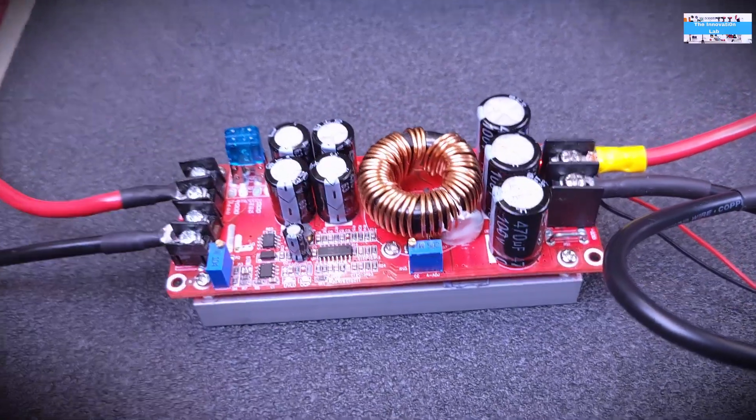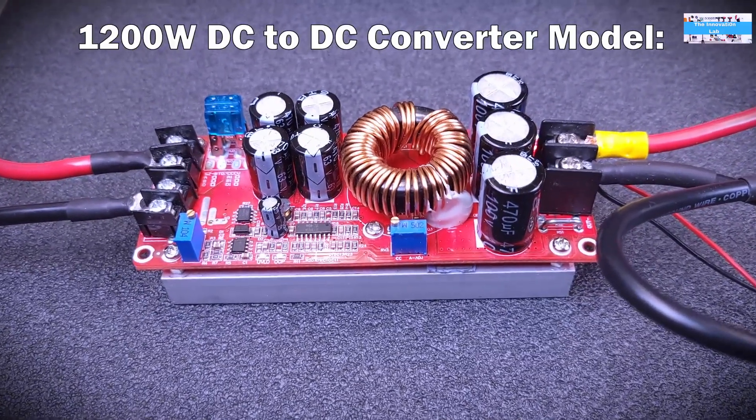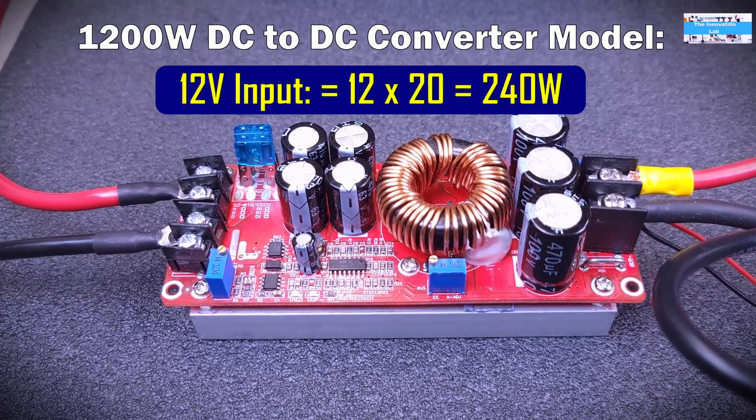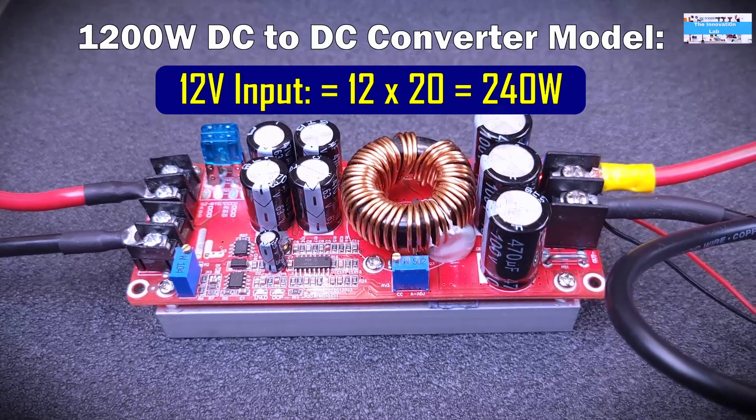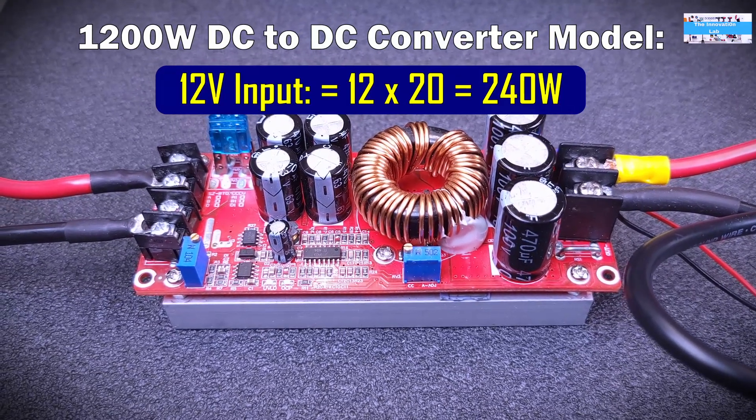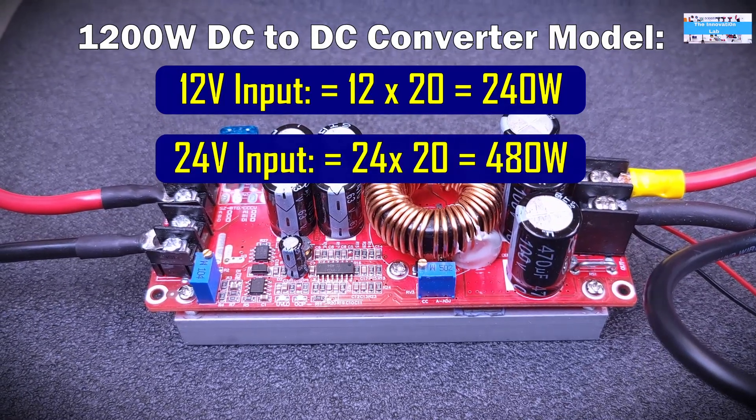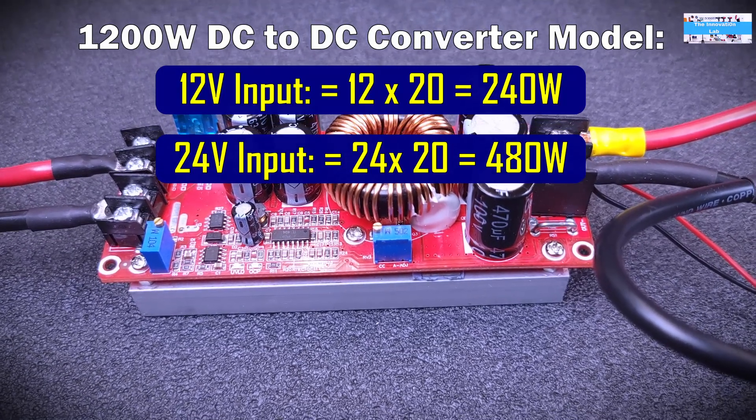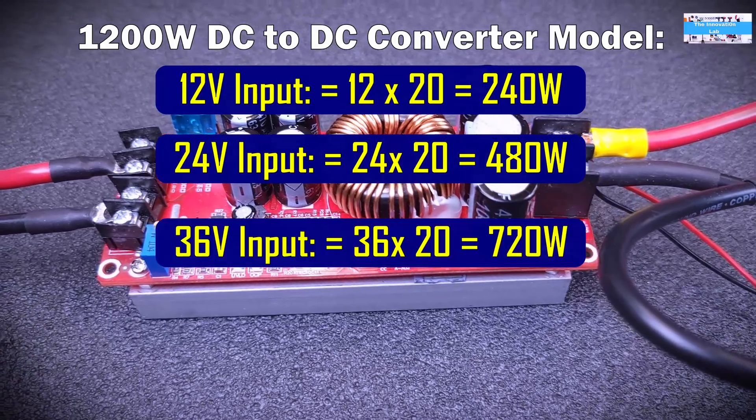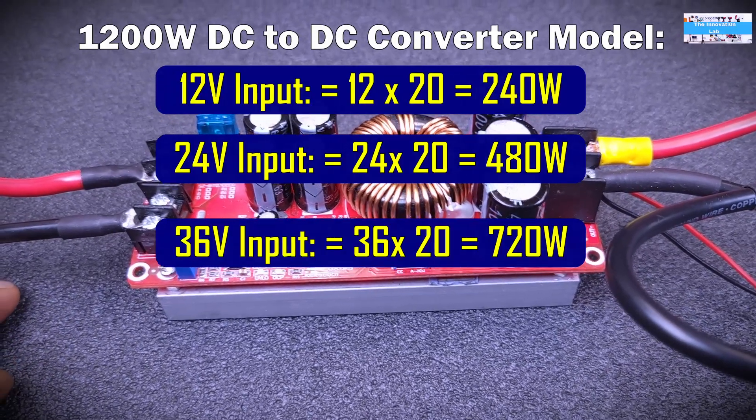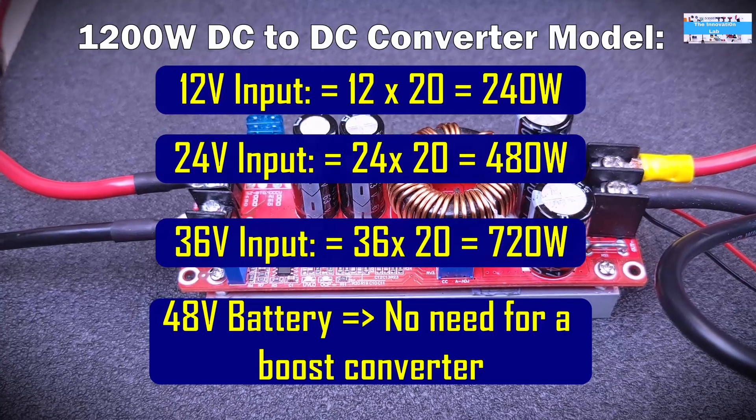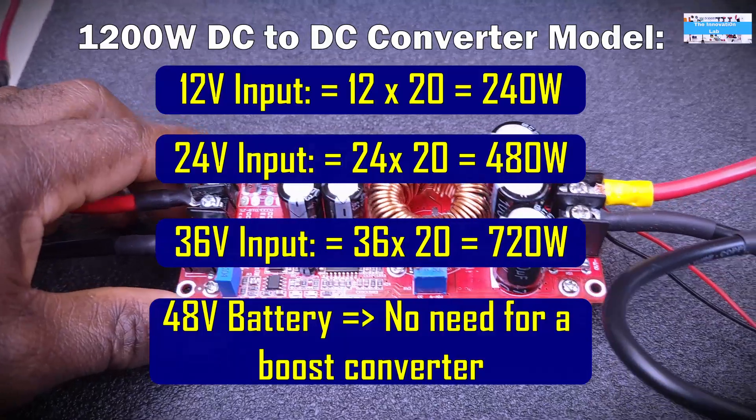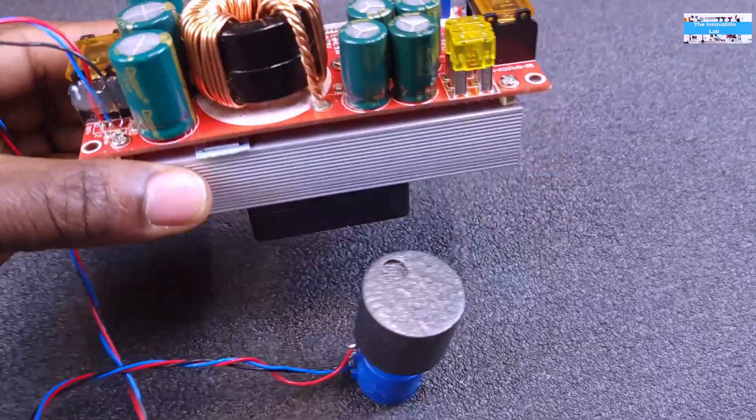What that means is if your plan is to drive this DC electric motor depending on the power rating, you will only be limited to about - if you're using 12 volts you will be limited to 240 watts which translates to about 0.3 horsepower. If you use 24 volts you will be getting about 480 watts, which is about 0.64 horsepower. And if you go to 36 volts you'll be getting about 720 watts which translates to about 0.96 horsepower.